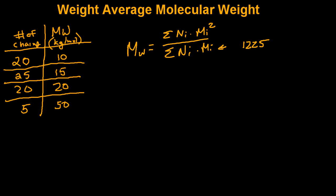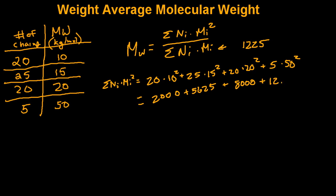So all we need to calculate now is the top half. The sum of n times Mi squared is going to be 20 times 10 squared plus 25 times 15 squared and so on and so on. It works out to be 2000 plus 5625 plus 8000 plus 12500, which is equal to 28125.